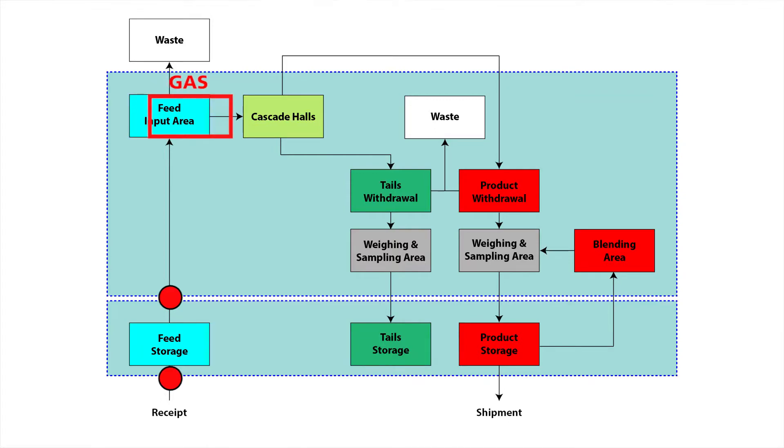The process for this will depend on the type of enrichment plant, but the end result is a gas product being fed into the cascade hall. There will also be some small amount of waste as a result of this process, so we need to monitor the material entering the cascade halls to have an accurate measurement of the UF6 gas that enters the enrichment area. This could be accomplished using an online flow monitor.